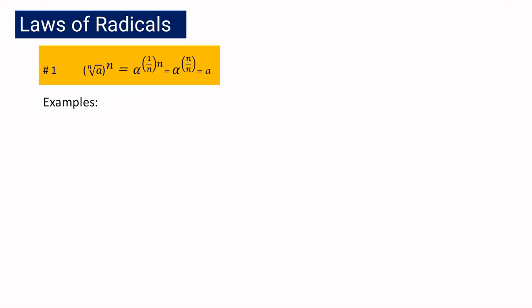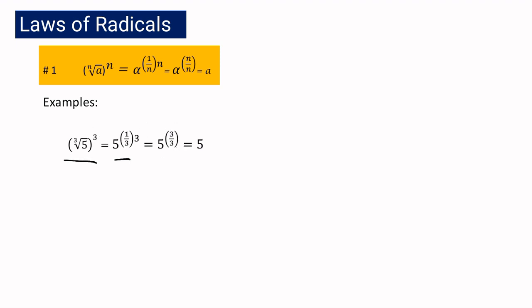Let us have a few examples. If we have the cube root of 5 raised to the third power, the expression cube root of 5 will be written as 5 raised to 1 third, and then raised to 3. So it will become 1 over 3 multiplied by 3, written as 3 over 3, which is equal to 1. That is why cube root of 5 raised to 3 will become 5.